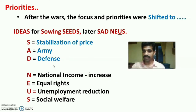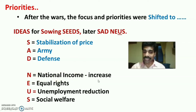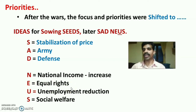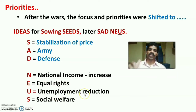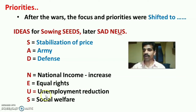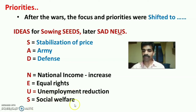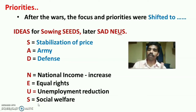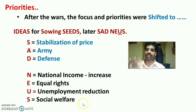The shifted priorities are captured in the mnemonic NEWS: N stands for National income — increasing national income; E stands for Equal rights to all citizens to avail goods and services; U stands for Unemployment reduction, to reduce unemployment and maintain economic stability; and S stands for Social welfare services, which continued in the second phase as well.